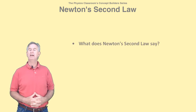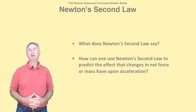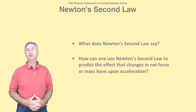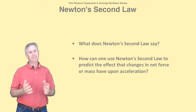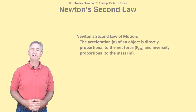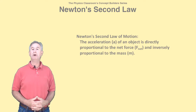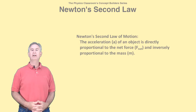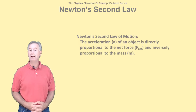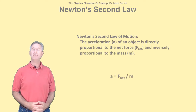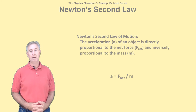What does Newton's Second Law say, and how can one use Newton's Second Law to predict the effect of changes in net force and mass upon the acceleration? Well, I'm Mr. H, and I have some answers for you. One of the assertions of Newton's Second Law is that the acceleration of an object depends upon the net force that it experiences and the mass that it has. The acceleration is directly proportional to the net force and inversely proportional to the mass. This is often expressed as the equation A equals F net divided by mass.